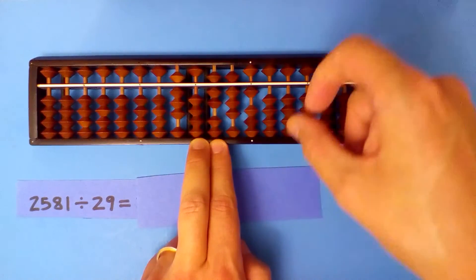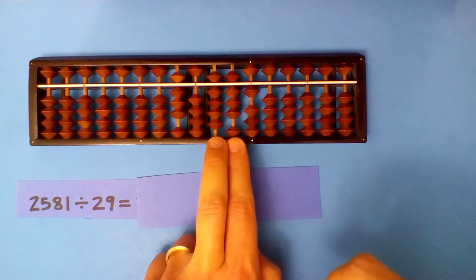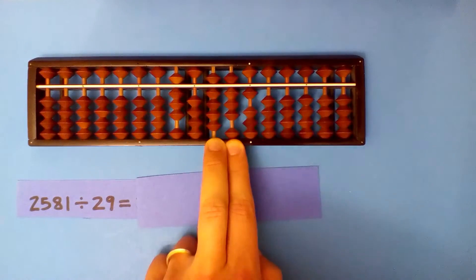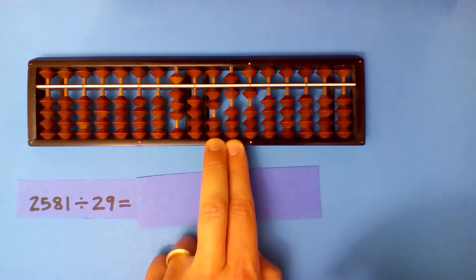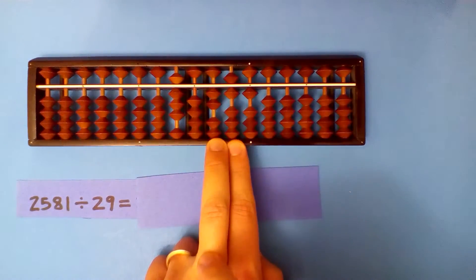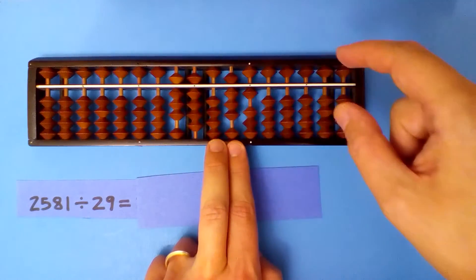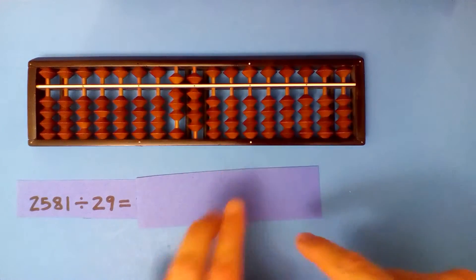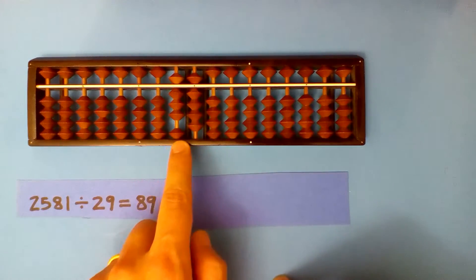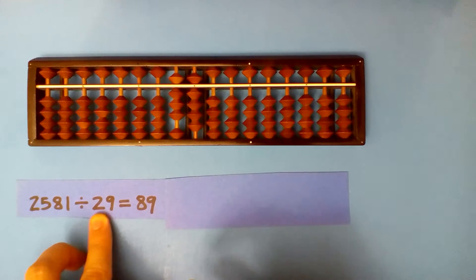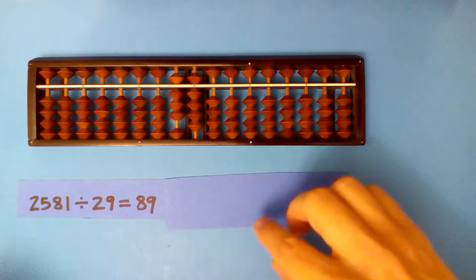Now I'll add instead of subtract: one times 2 is 2. And continuing on — I multiplied the 2 wrong, but I hadn't done anything with the 9 yet, so I can keep going from where I am. Eight times 9 is 72. Now 29 into 2.6 — nine times 2 is 18, nine times 9 is 81. Our quotient is 89. I messed up on multiplying the 2, so I went back, corrected it, and then was good to go.